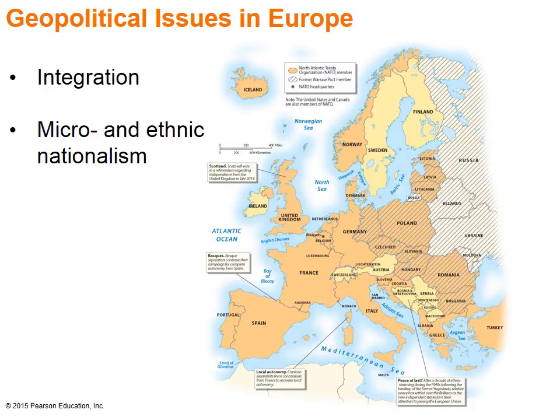Although the major geopolitical issue of the early 21st century remains the integration of Eastern and Western Europe into the EU, numerous issues of micro and ethnic nationalism also engender geopolitical fragmentation. In parts of Europe such as Spain, France, and Great Britain, questions of local ethnic autonomy challenge central governments. For example, the Basque in northern Spain would like complete autonomy from Spain, Scotland from the United Kingdom, and Corsica from France.